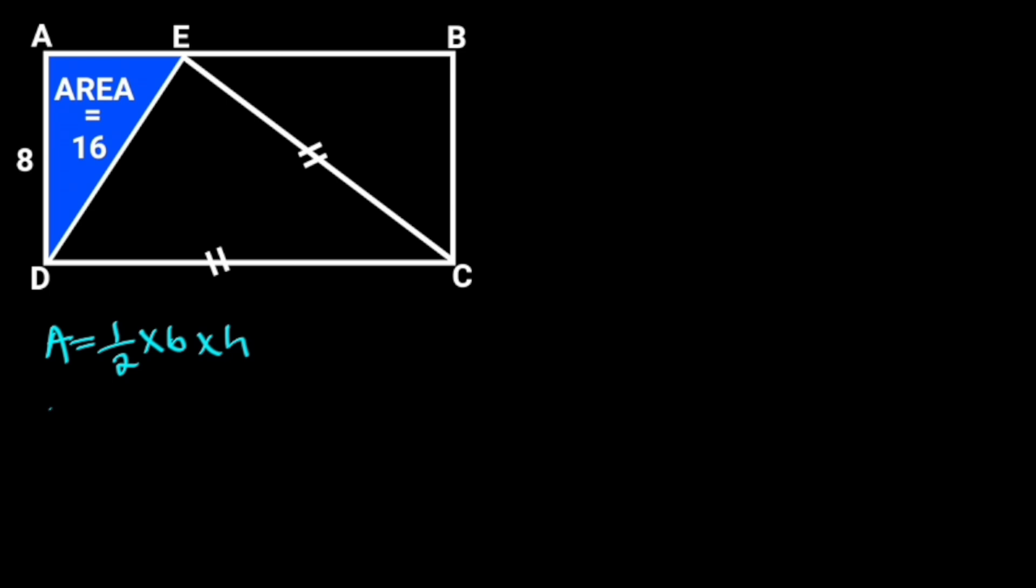Since the area of the triangle is given as 16 square units, let's take the base of the triangle to be AE, and the height to be 8. So that 16 will be equal to 1 over 2, times AE, times 8.